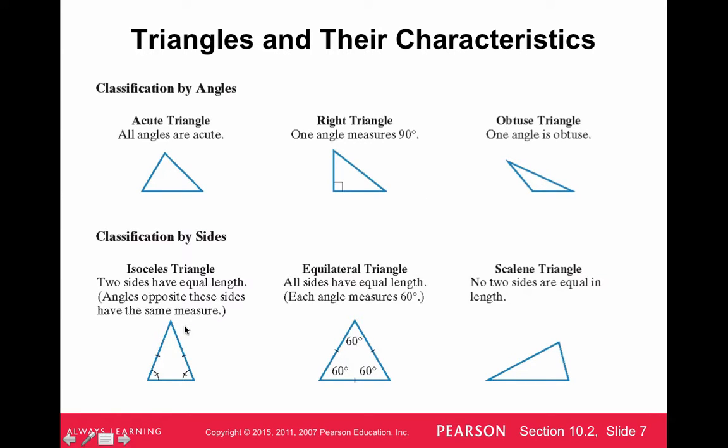So an isosceles triangle is when two of the sides are equal, and an equilateral triangle is when all three of the sides are equal, and if that's the case, then all three angles are going to be 60 degrees. I forgot to mention, in this isosceles triangle, the two base angles there are always going to be equal as well.